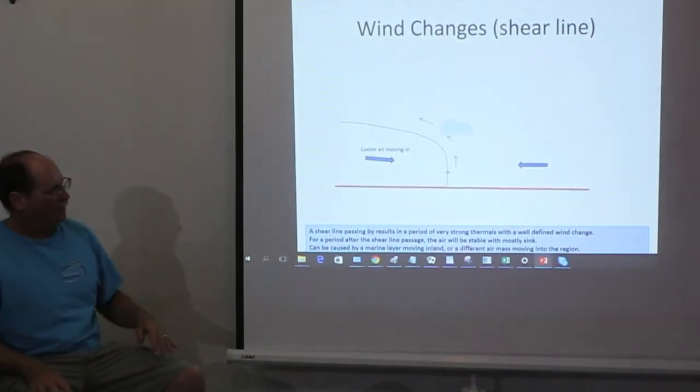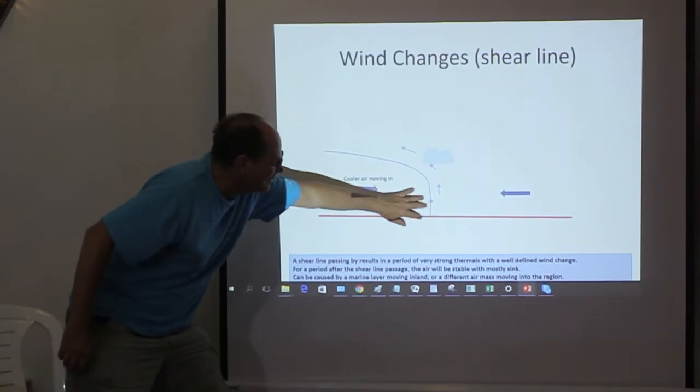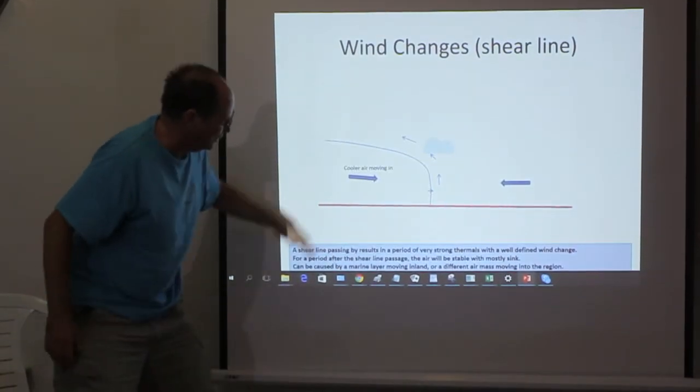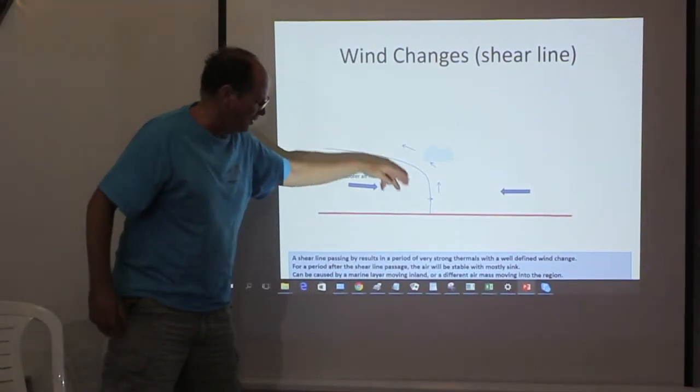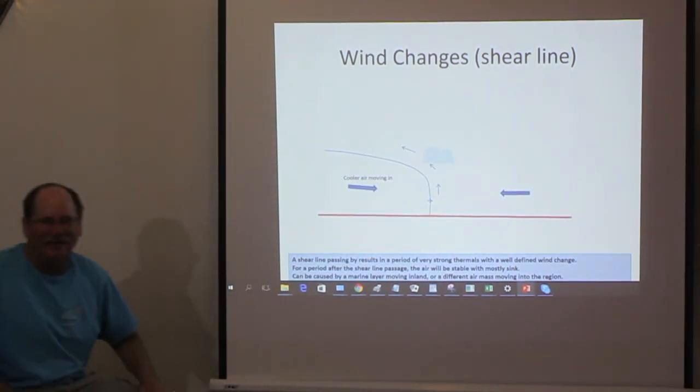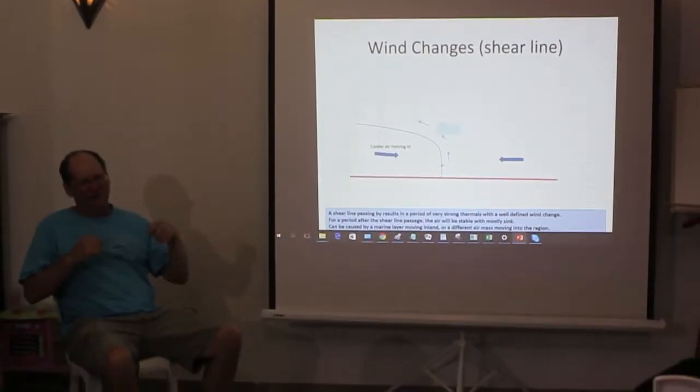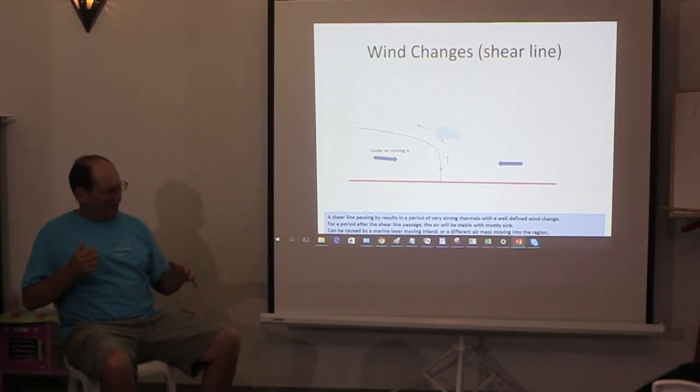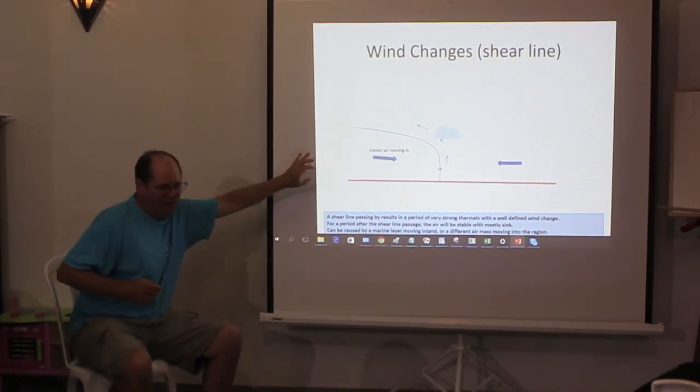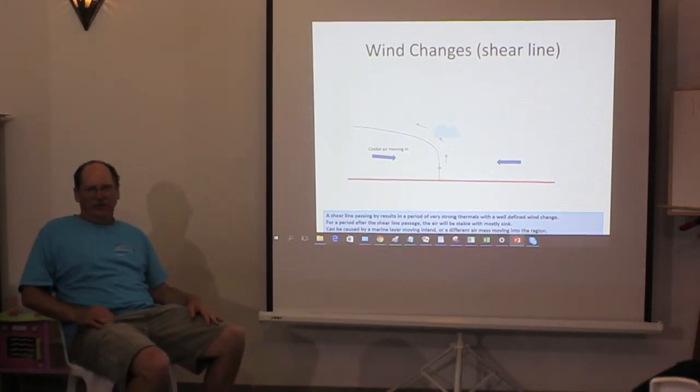And then typically the worst time of the day is after the cool air comes in because the air is still warm up top but cool near the ground, so the local lapse rate's horrible. So you've got a time where there's just not much lift and anything you find is really small and breaks up easily. And then 15 minutes later now you're in the established cooler air mass and now you're going back to a different thermal period.